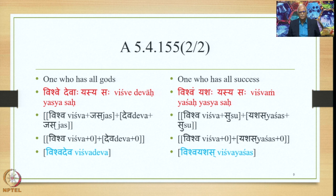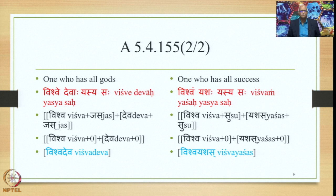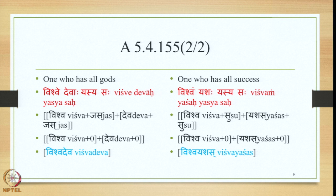Similarly, for the meaning 'one who has all success,' the Laukika Vigraha is Vishwam Yashaha Yasyasaha. The Alaukika Vigraha is Vishwa plus Su plus Yashas plus Su. The Kap suffix is not added here either. After Samasa Saudhnyaya and Pratyavadika Saudhnyaya, Supodhatup Pratyavadika Yoho applies, giving Vishwa plus 0 plus Yashas plus 0. Joining them, we get the form Vishwayashas. No Samasanta Pratyaya is added because of 5.4.155 — since these are technical terms (Saudhnyas).